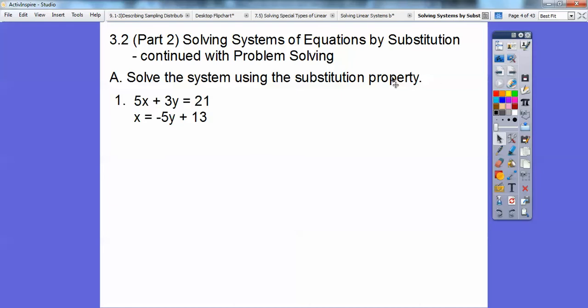So here we have two equations, 5x plus 3y equals 21. And this one has x equals negative 5y plus 13. So what we're going to do is substitute in this x equals this stuff right here for that x right there. So I highlighted that in red and I put parentheses there because inside this parentheses is going to be this stuff, negative 5y plus 13. So here I did it over here on the right.